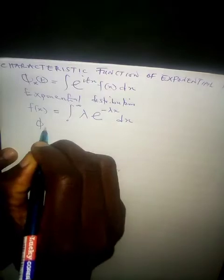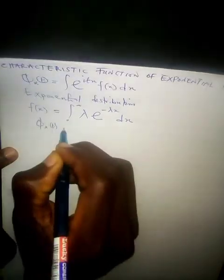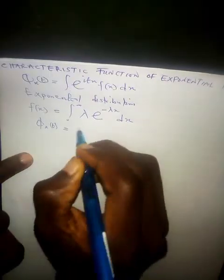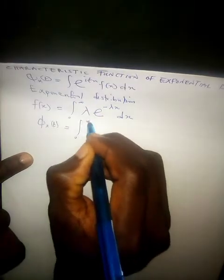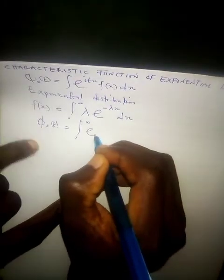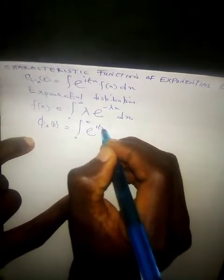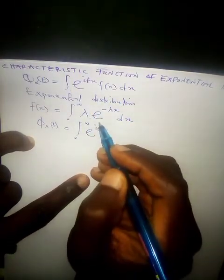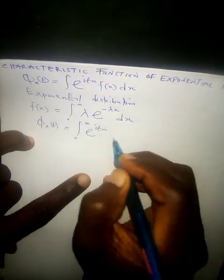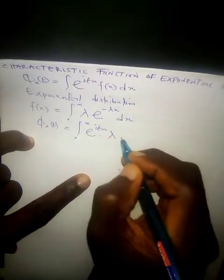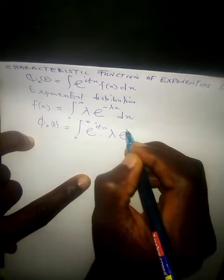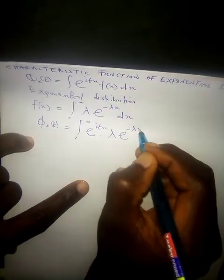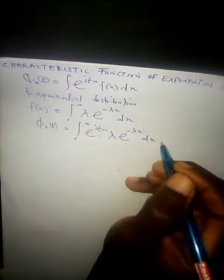The characteristic function of this exponential distribution will be phi subscript x of t equals the integral from zero to positive infinity of exponential raised to the power i theta t x, multiplied by f of x. Our f of x here is lambda times exponential raised to the power minus lambda x.